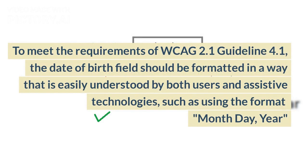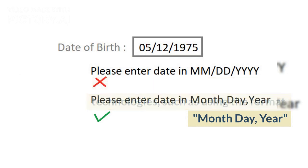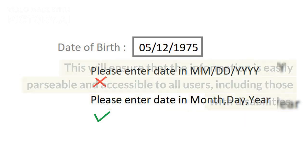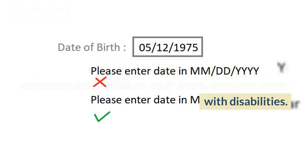To meet the requirements of WCAG 2.1 Guideline 4.1, the date of birth field should be formatted in a way that is easily understood by both users and assistive technologies, such as using the format month-day-year. This will ensure that the information is easily parsable and accessible to all users, including those with disabilities.